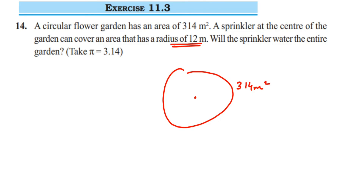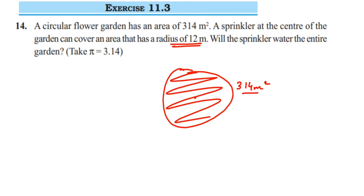The question is: will the sprinkler cover the entire flower garden or not? There are two ways of finding it. One way is: since we have given the area of this circular garden as 314, using this area we can find out the radius r. Using the equation area = π r², we can find the value of r and then compare it — if the radius of the circular garden is less than or equal to the sprinkler's radius, then yes, it is covering.